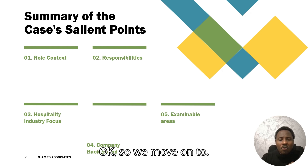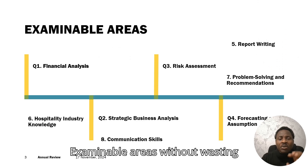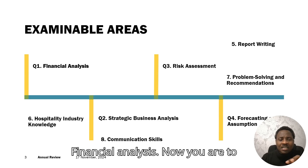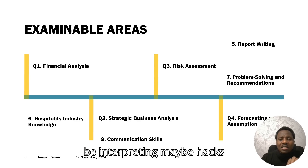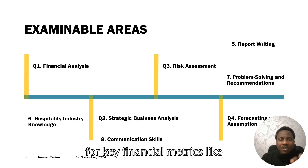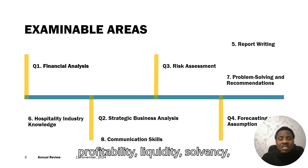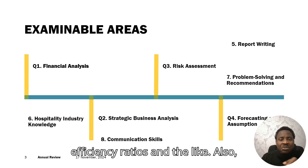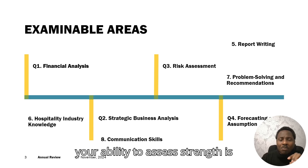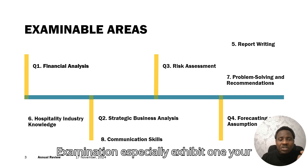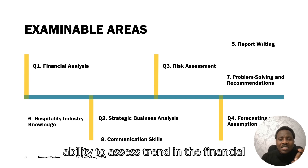Moving on to examinable areas without wasting much time — financial analysis. You are to be interpreting key financial metrics like profitability, liquidity, solvency, and efficiency ratios. Your ability to assess trends is important for this examination, especially in exhibit one — your ability to assess trends in financial statements and identify areas that require improvement.